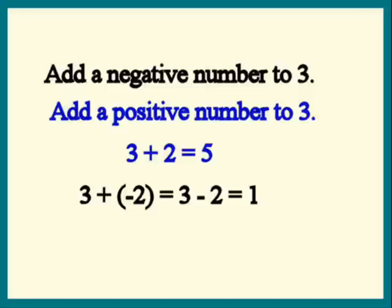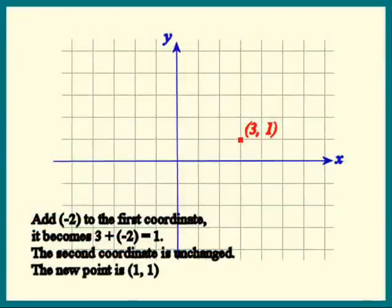So in this particular case, adding negative two to the first coordinate made the first coordinate one. The second coordinate didn't change. Our new point is therefore one comma one. There it is.